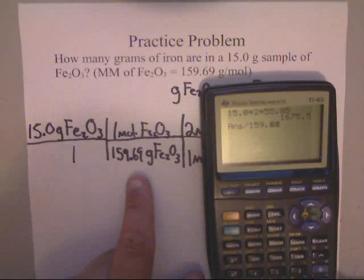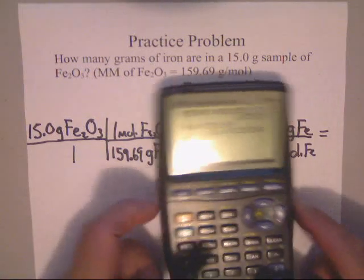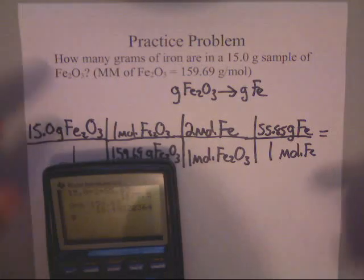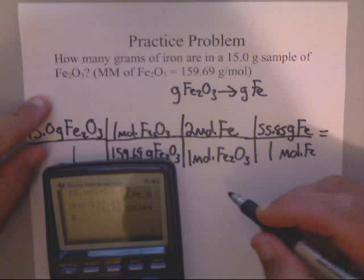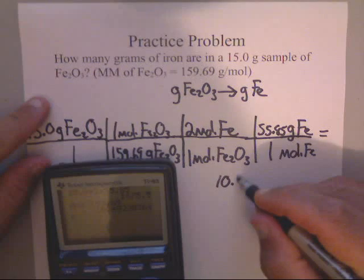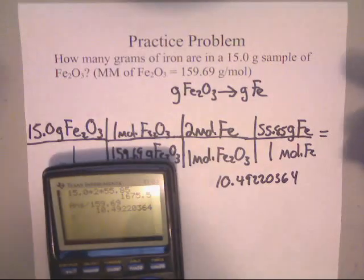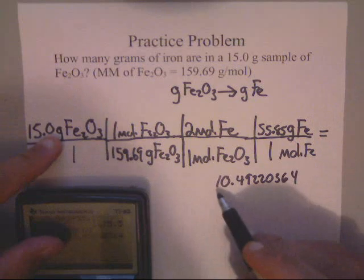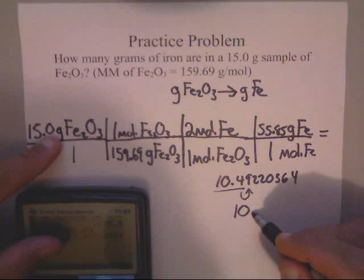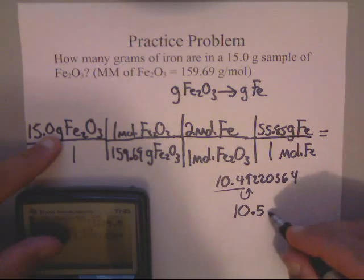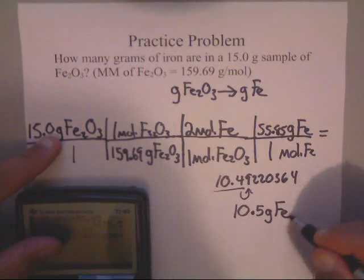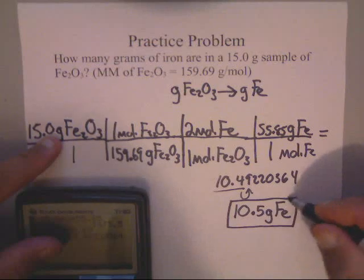We get 10.4922036... Now we only need three sig figs, so look to the right to round. My answer is 10.5 grams of Fe.